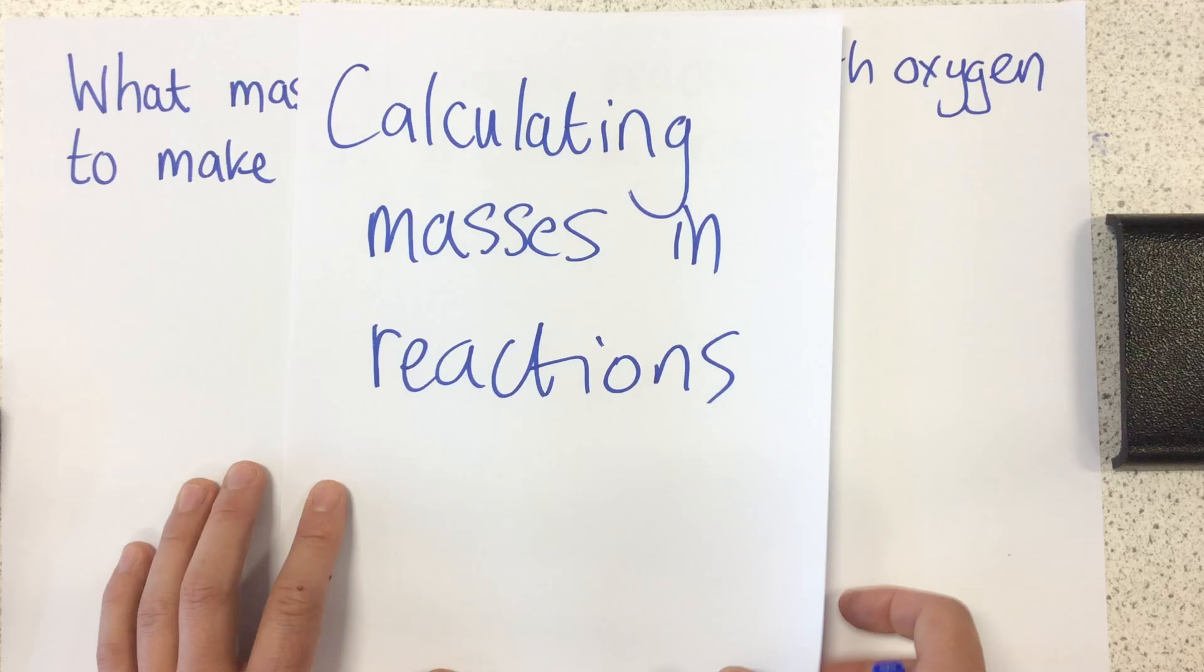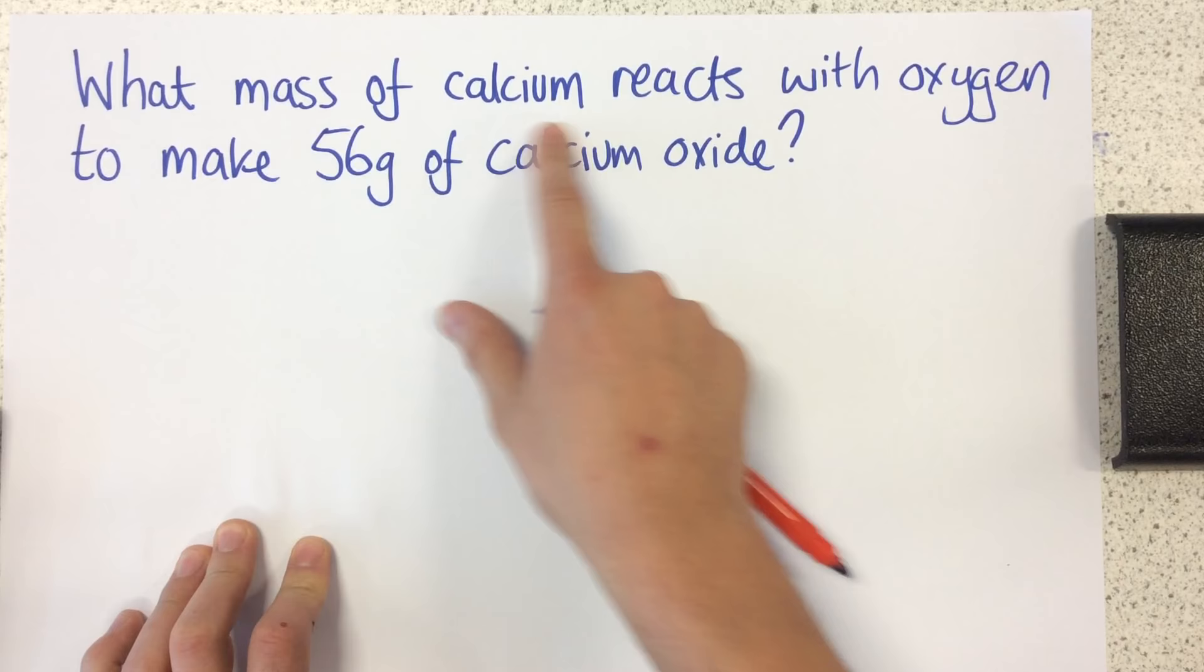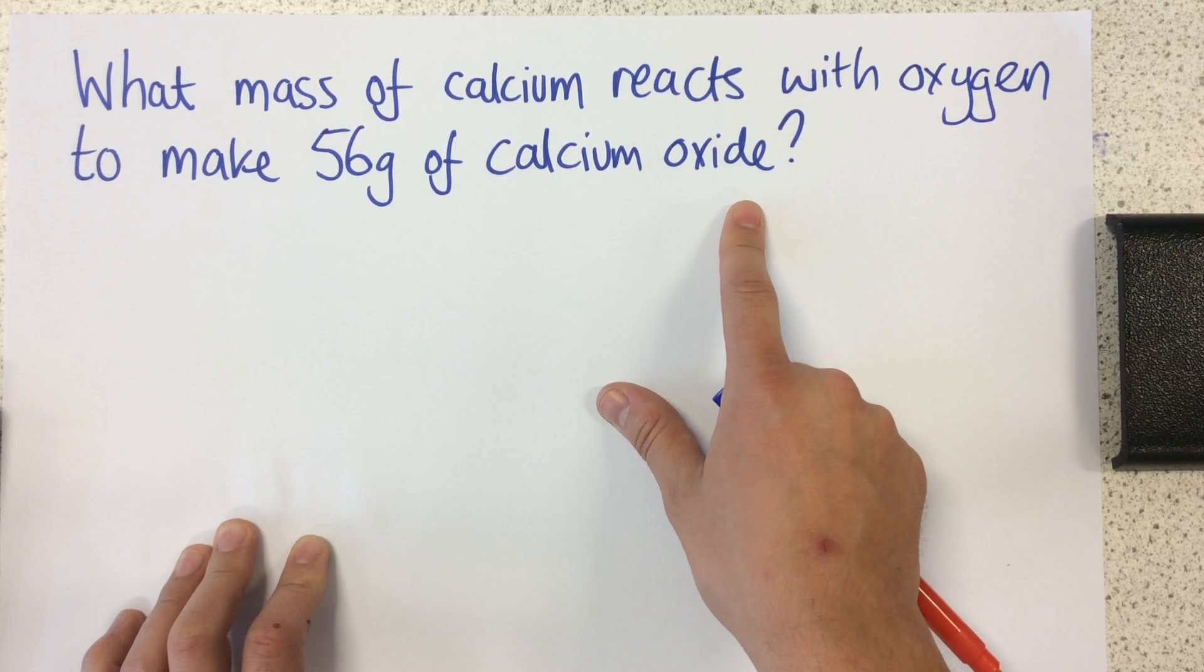So here's the kind of question you might get: What mass of calcium reacts with oxygen to make 56 grams of calcium oxide? The first thing to do is write a balanced symbol equation.